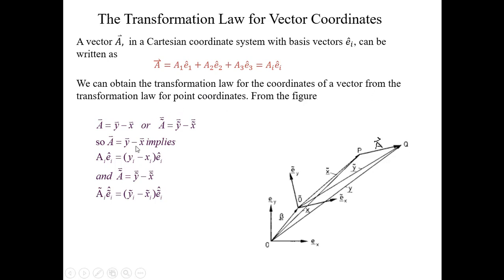We can obtain the transformation law for the coordinates of a vector from the transformation law for point coordinates. Consider from the figure: if you have point P and point Q, with position vectors in both systems, then vector A is basically Y minus X, where Y is the position vector of point Q and X is the position vector of point P, both in the non-tilt system. Similarly in the tilt system, A-tilt is Y-tilt minus X-tilt.